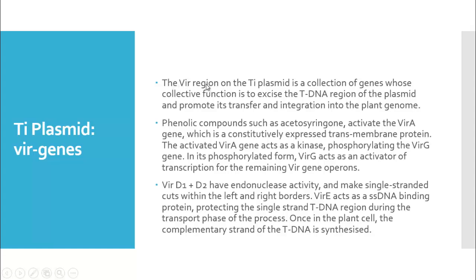The vir region on the Ti plasmid is a collection of genes whose collective function is to excise the T-DNA region of the plasmid and promote its transfer and integration into the plant genome. Phenolic compounds such as acetosyringone activate the vir-A gene, which is a constitutively expressed transmembrane protein. The activated vir-A gene acts as a kinase that phosphorylates the vir-G gene. In its phosphorylated form, vir-G acts as a transcriptional activator for the remaining vir genes of the operon.